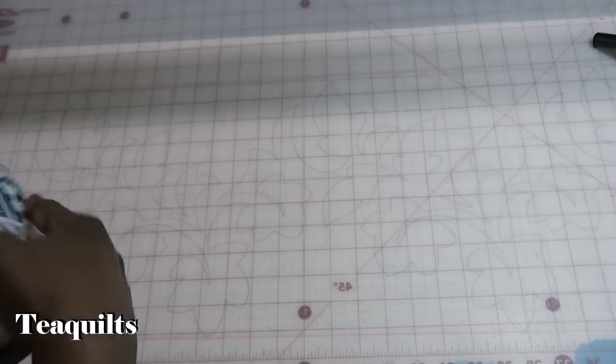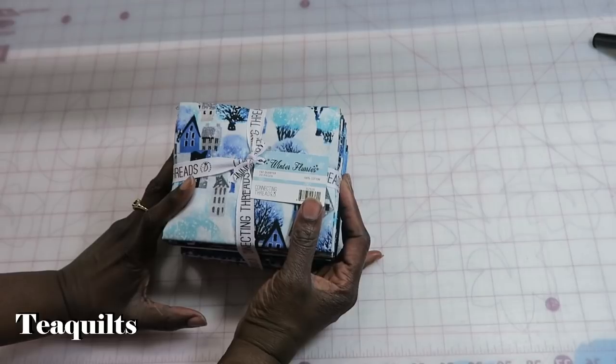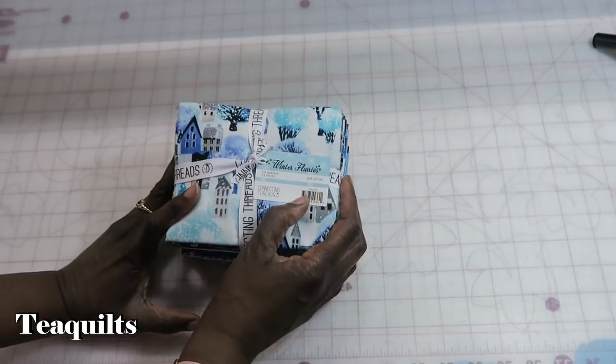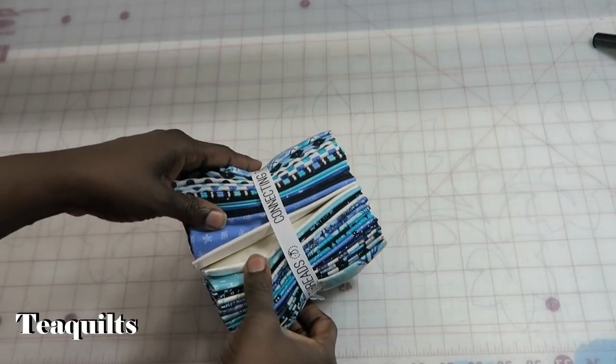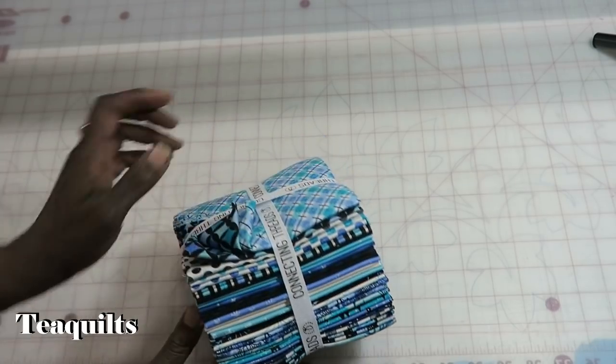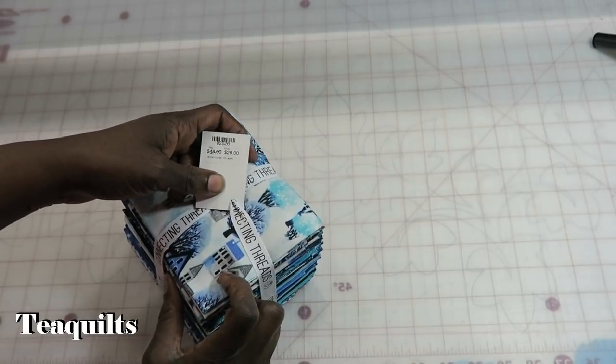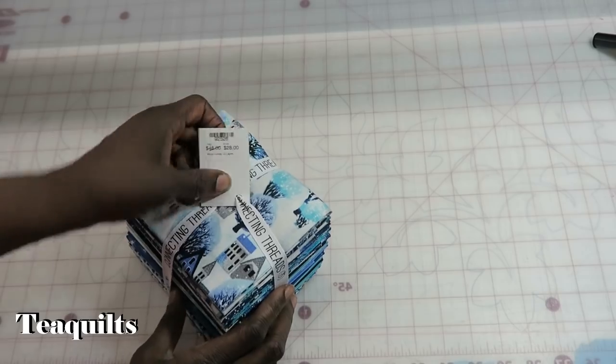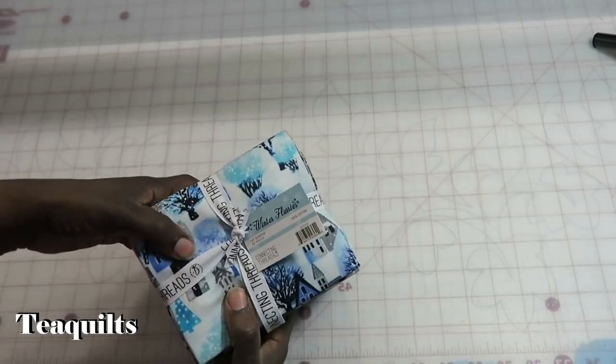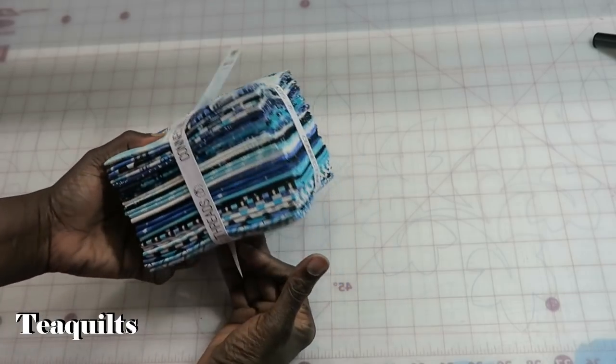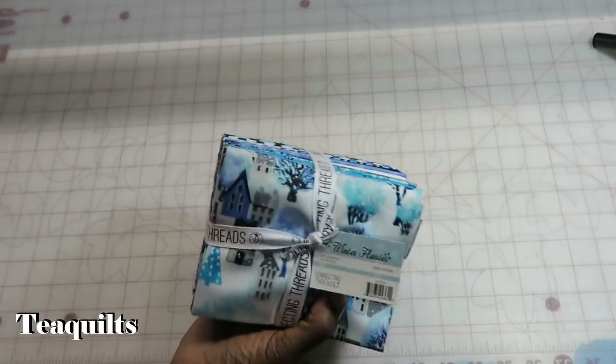And then from connecting threads, I actually purchased the winter flurries fat quarter pack. It has 23 fat quarters in it and I just love the colors, although I did not need a winter charm pack. It was just so pretty. And for 23 fat quarters, this was just $28. So I thought that was a good deal because it's just over a dollar per fat quarter. Anything less than $2 a fat quarter, I think is a great price.